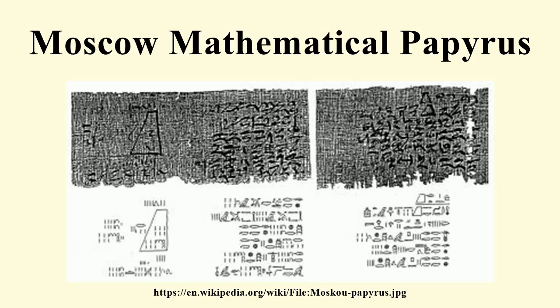The solution amounts to computing the area in a way that indicates the scribe of the Moscow Papyrus used pi as an approximation.